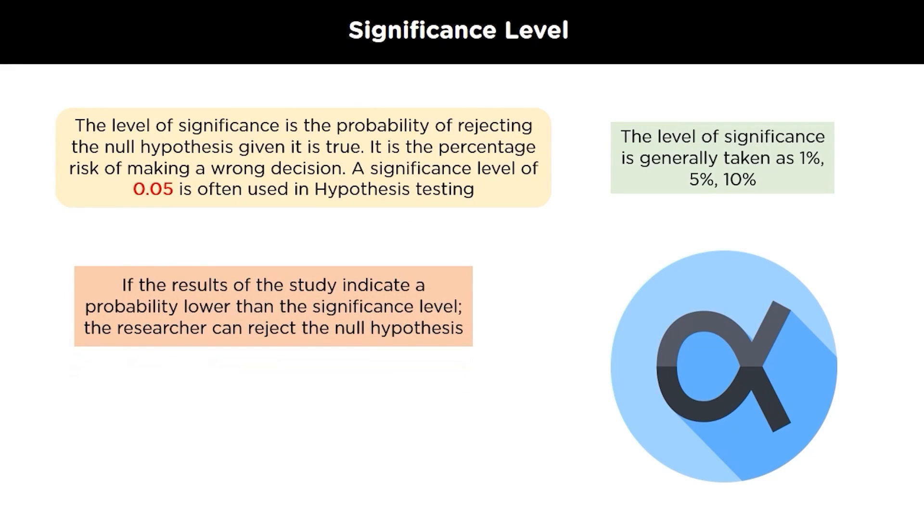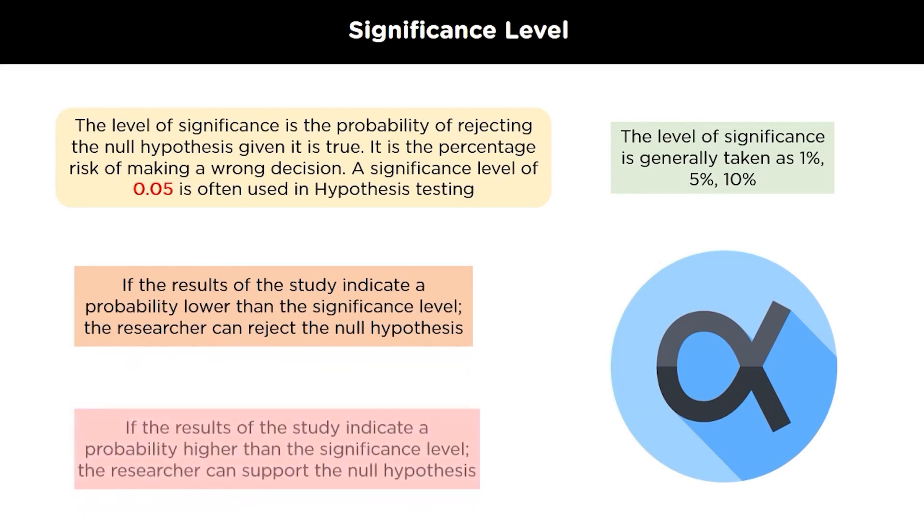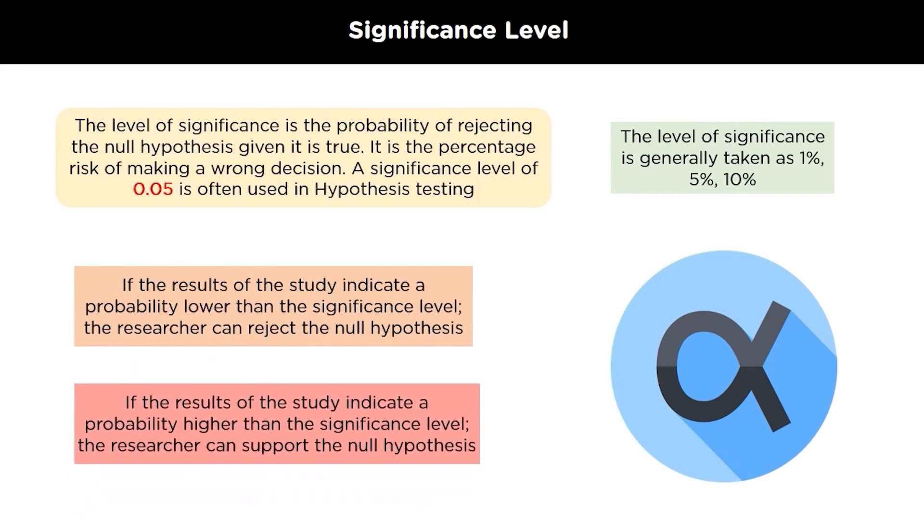If the result from the study indicates the probability lower than the significance level, in this case a researcher can reject a null hypothesis. Otherwise, if the result of the study indicates the probability higher than the significance level, the researcher can support the null hypothesis.